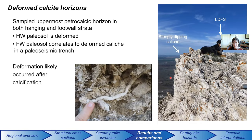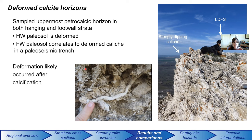The caliche layers in the hanging wall are deformed — here's a nice picture of the steeply dipping caliche layers. We sampled this material to figure out when it was deformed. We sampled the uppermost petrocalcic horizon both in the hanging wall and in the footwall. The hanging wall was deformed, and the footwall at the site of collection was not deformed but was found to be deformed in a nearby paleoseismic trench. If we can date the timing of caliche formation, it gives us a maximum estimate of when deformation happened — the deformation occurred after calcification.